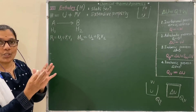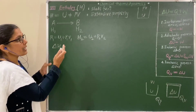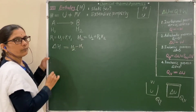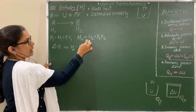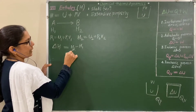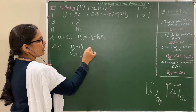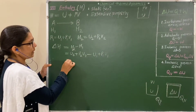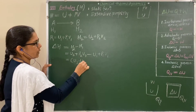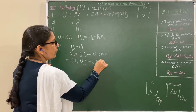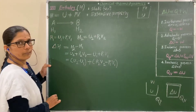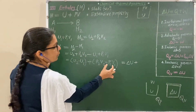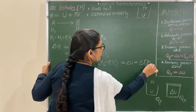The change in enthalpy, ΔH, equals H2 minus H1. Substituting the values: ΔH = (U2 + P2V2) − (U1 + P1V1), which gives ΔH = (U2 − U1) + (P2V2 − P1V1), that is ΔH = ΔU + Δ(PV). This is equation number 1.